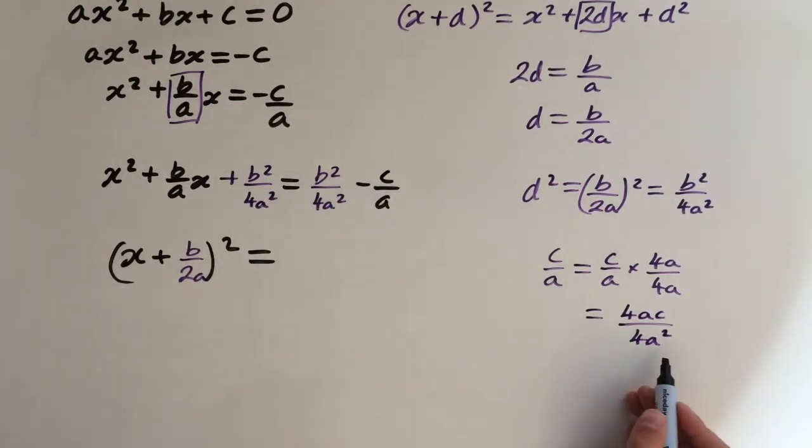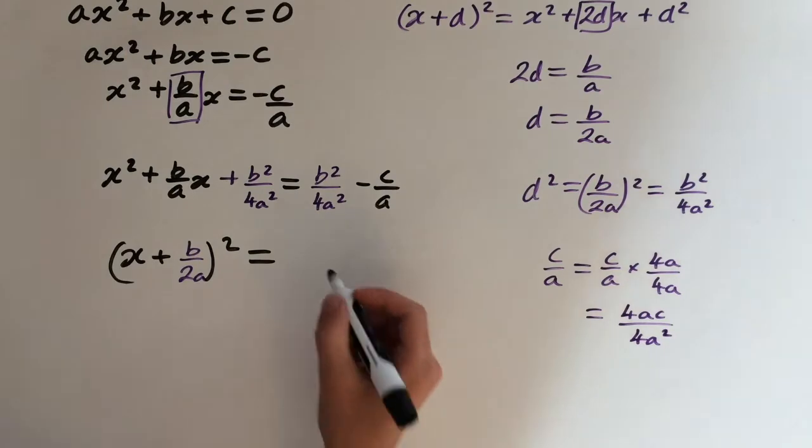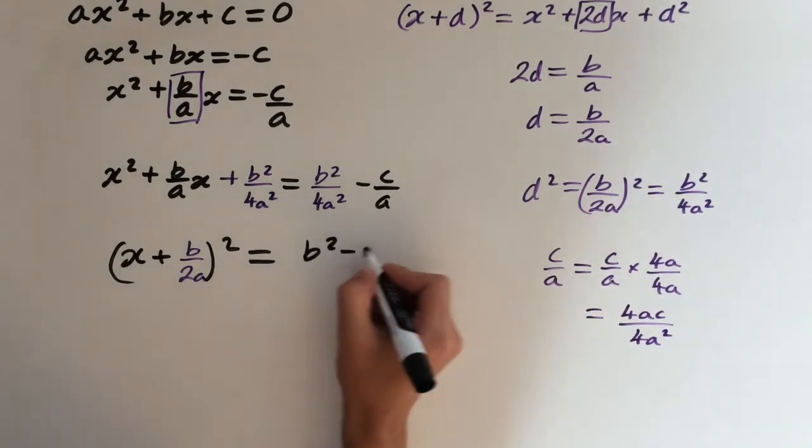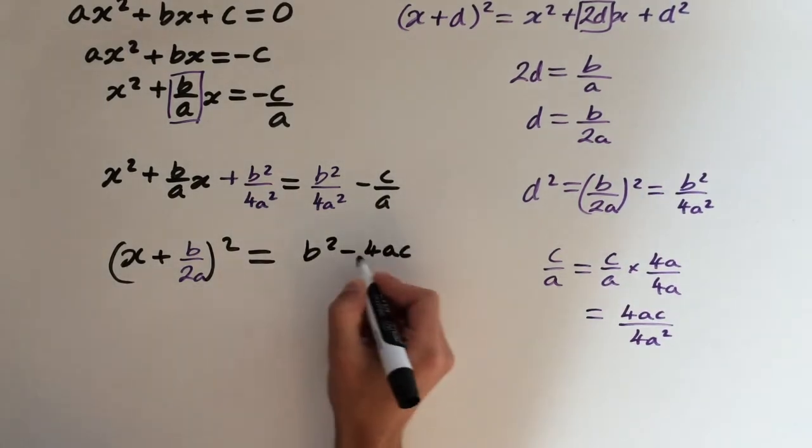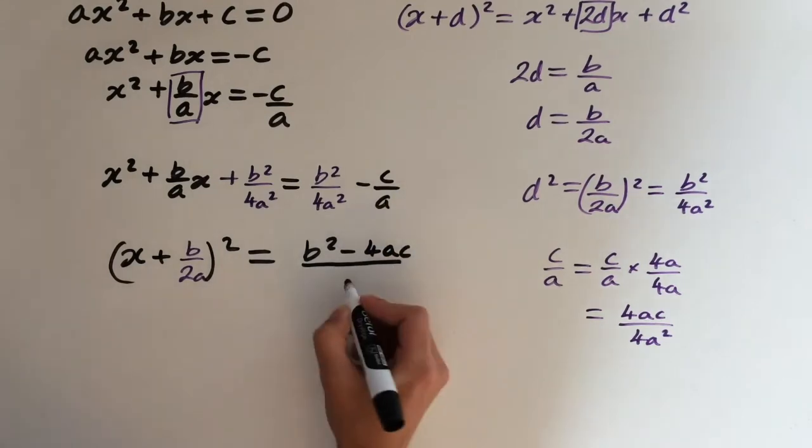Now both of these fractions have the same denominator, so we can just add them. This will give us b² minus 4ac over 4a².